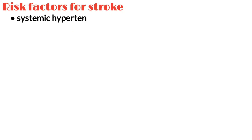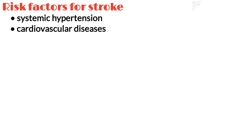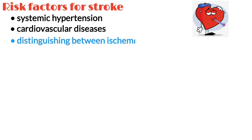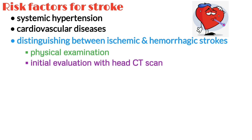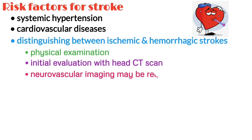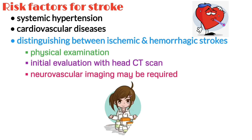Systemic hypertension and other cardiovascular diseases are common risk factors for both ischemic and hemorrhagic strokes. Distinguishing between ischemic and hemorrhagic strokes based on physical examination is difficult and requires initial evaluation with a head CT scan. Further neurovascular imaging may be required before deciding the treatment options.